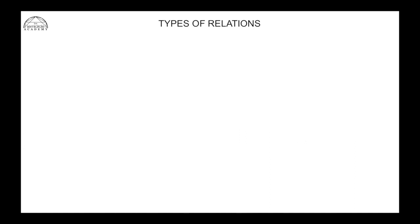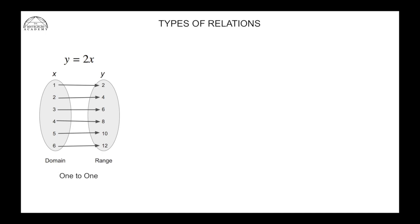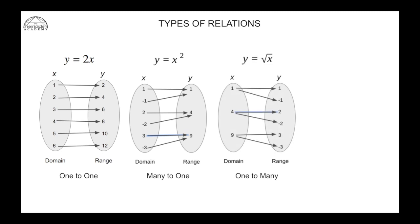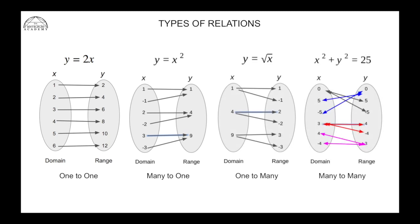Let's summarize the four different types of relations we learned: the one-to-one relation, the many-to-one relation, the one-to-many relation, and the many-to-many relation. Take your time, go through the video, pause, and take a look. I would suggest writing down all of these things as notes in your book so you don't have to keep coming back to the video.